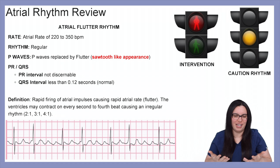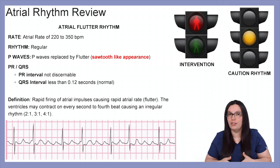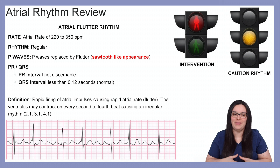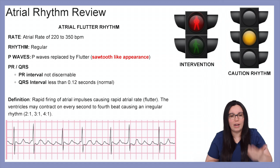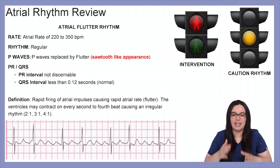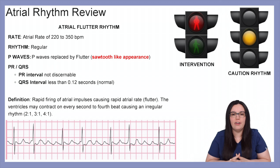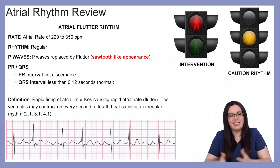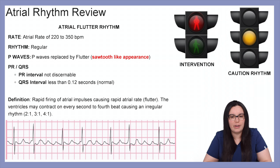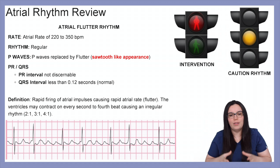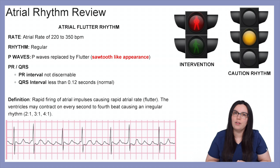We begin with atrial flutter. The atrial rate will be between 220 to 350 beats per minute. The rhythm will be regular, and P waves will be replaced with flutter — that sawtooth-like appearance you see in the example. The PR intervals will be non-discernible, and the QRS intervals should still remain normal. The ventricles may contract on every second to fourth beat: two to one, three to one, and four to one.